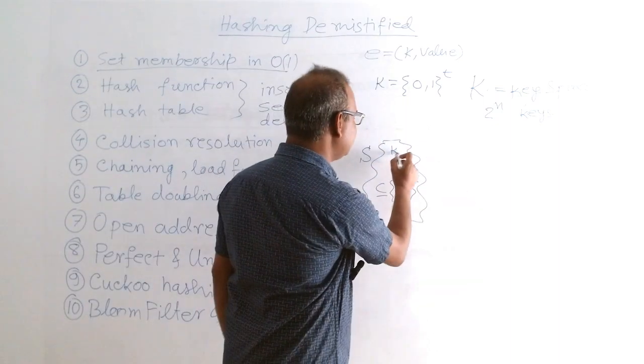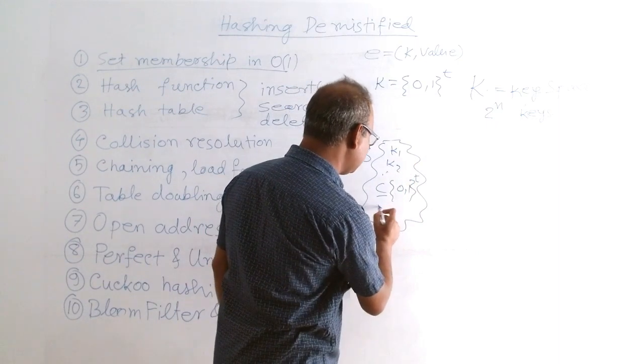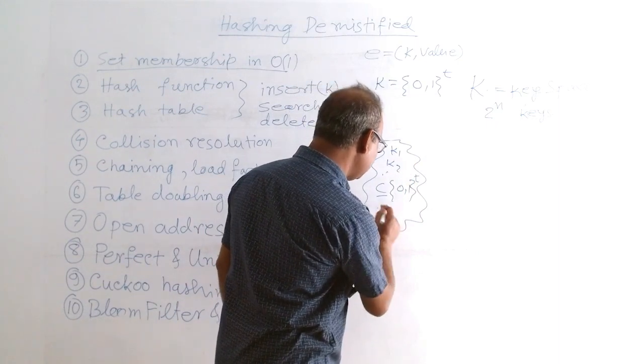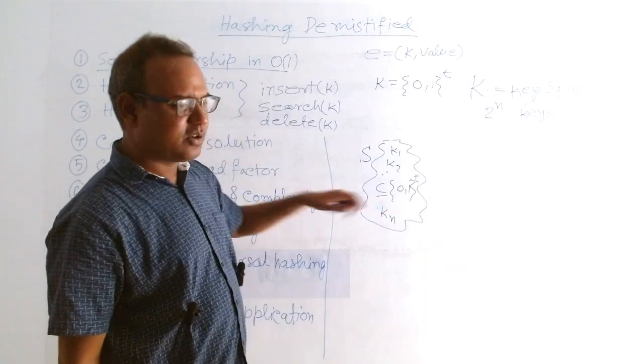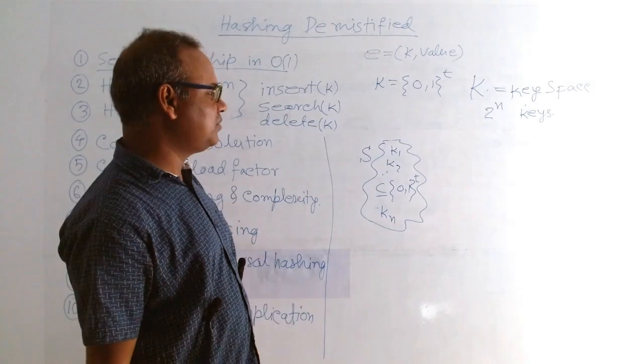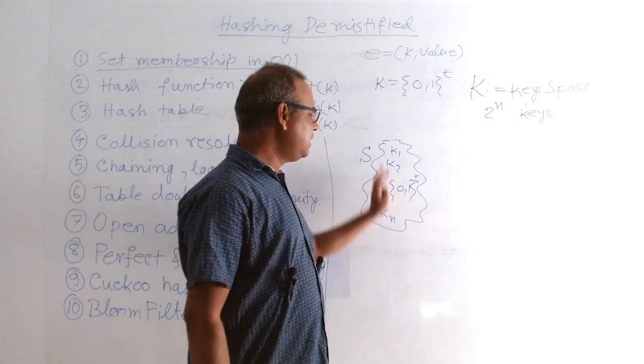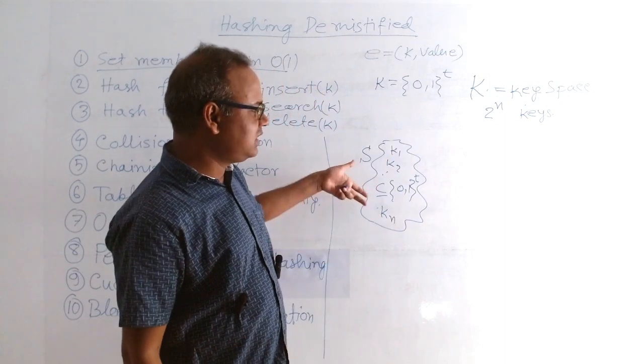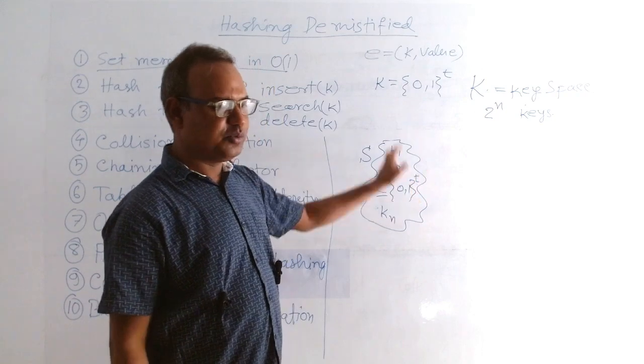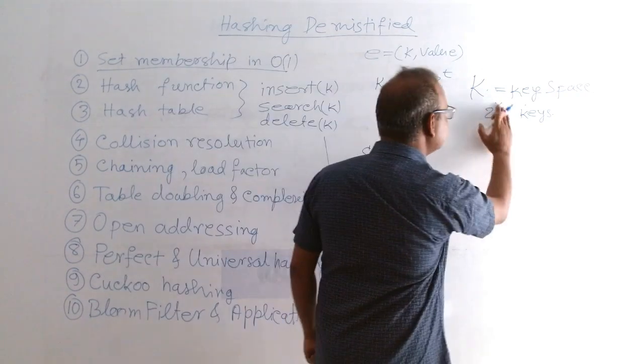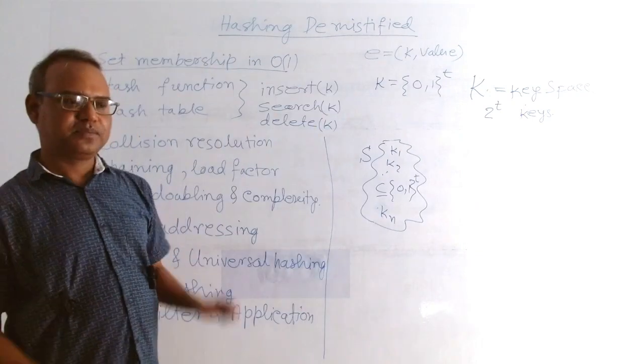There are key k1, k2, and any arbitrary element up to kn. These keys are not all the keys, but there may be other possible keys. So when we are creating the function, we have to take care of this fact that our domain size is 2 to the power - this is not n, which is t - 2 to the power t. That is the domain size.